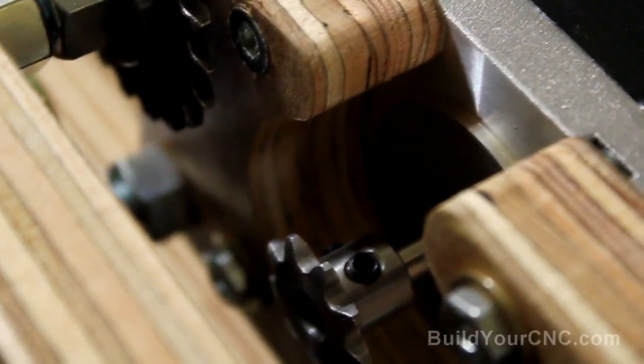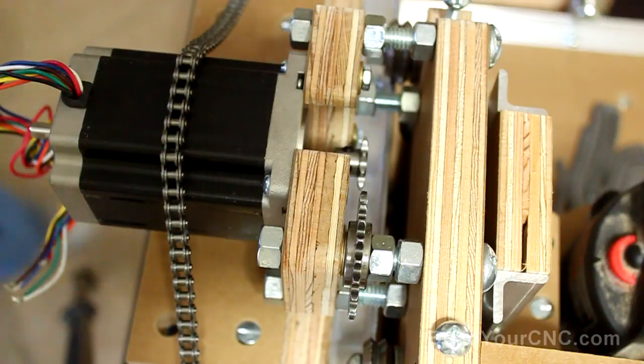Then just take an Allen wrench and tighten it. And tighten it as much as possible. You might need to get some torque on this Allen wrench. Okay, that's good. Now that's on. Now we can put on the chain for the Y axis.